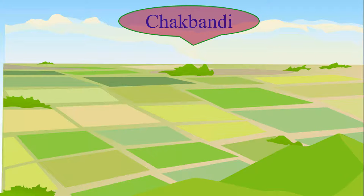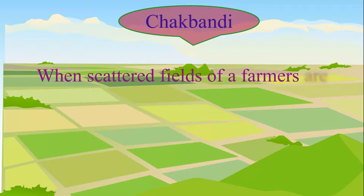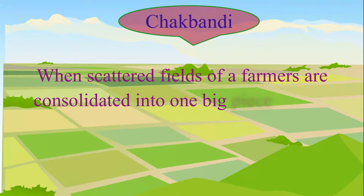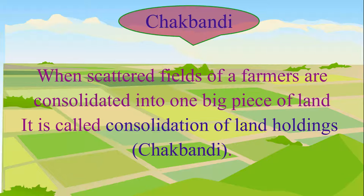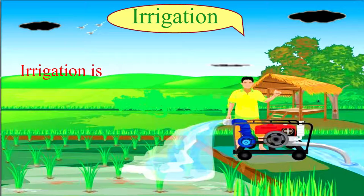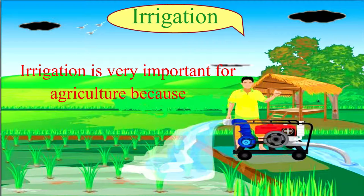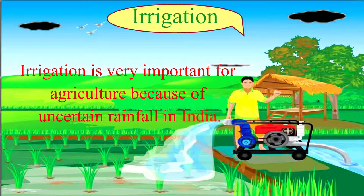Fruitful farming cannot be done on scattered small portions of land. So, scattered portions of the farmers' land are consolidated into one big piece of land. It is called consolidation of land holdings. Farmers को उनकी बिखरी हुई जमीन के टुकड़ों के बराबर, जब एक ही जगह खेती करने के लिए जमीन दे दी जाती है, तो उसे चकबंदी कहते हैं.